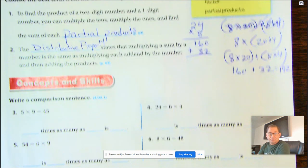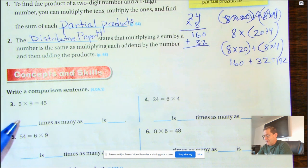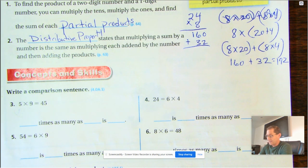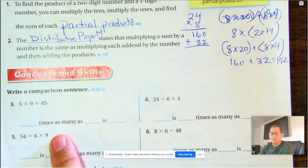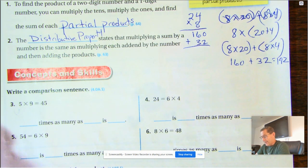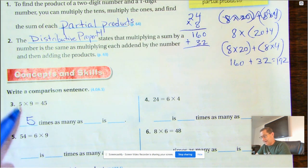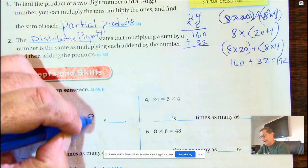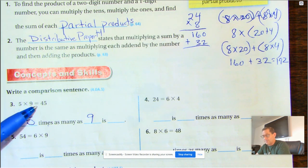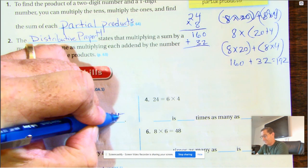All right. Number three, write a comparison sentence. We have 5 times 9 equals 45, but we have to put it in terms of words or a comparison. So we know that 5 times as many as 9—remember we talked about the equal being is, we can use the word is for that—45.